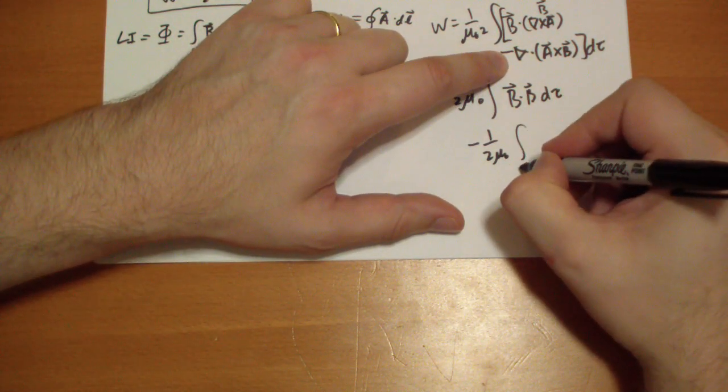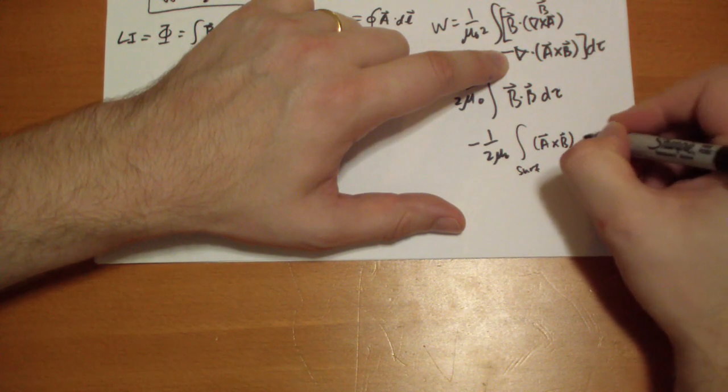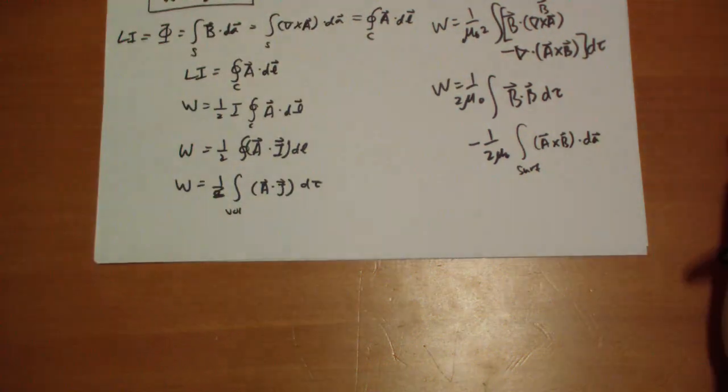So we get some surface integral of just A cross B dot the area there.